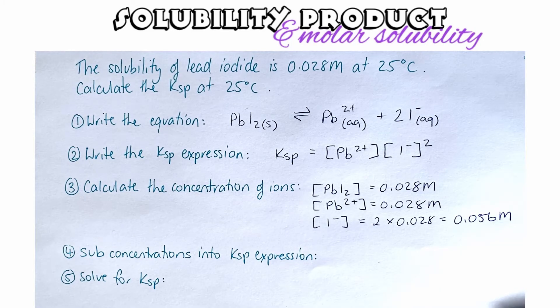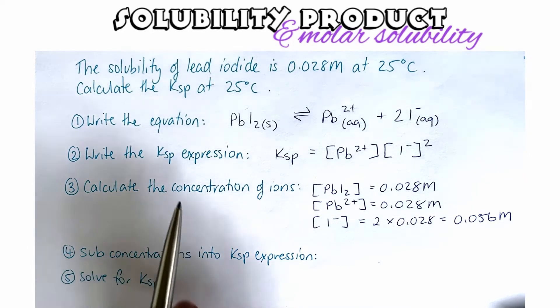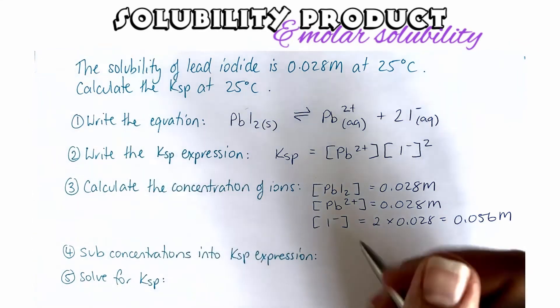Now we've got all of our concentration of the ions. So step number four is to substitute those concentrations back into our Ksp expression, which is up here in step number two. So our Ksp...